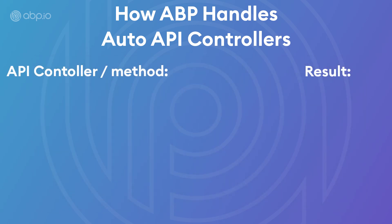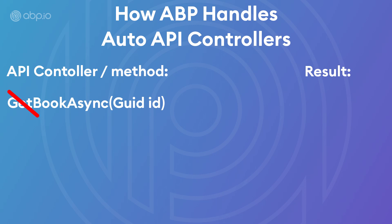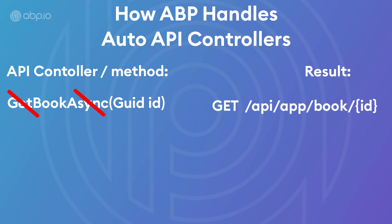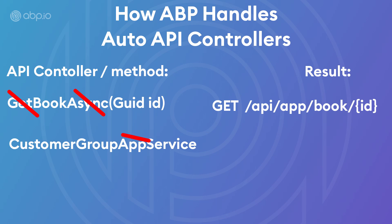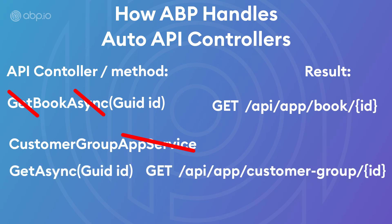After generating the API controllers, ABP trims out all the HTTP method prefixes — get list, get, get all, put, update, delete, remove, etc. It also trims out the async suffix, which is important to include if the method is asynchronous, because if the method is asynchronous and you did not define the async suffix, it's going to give an error when generating the proxies. As for the controller name, the AppService, ApplicationService, and Service suffixes are also trimmed out, and it converts the name to kebab case. For example, if we had CustomerGroupAppService, the result in the route is going to be customer-group in kebab case.